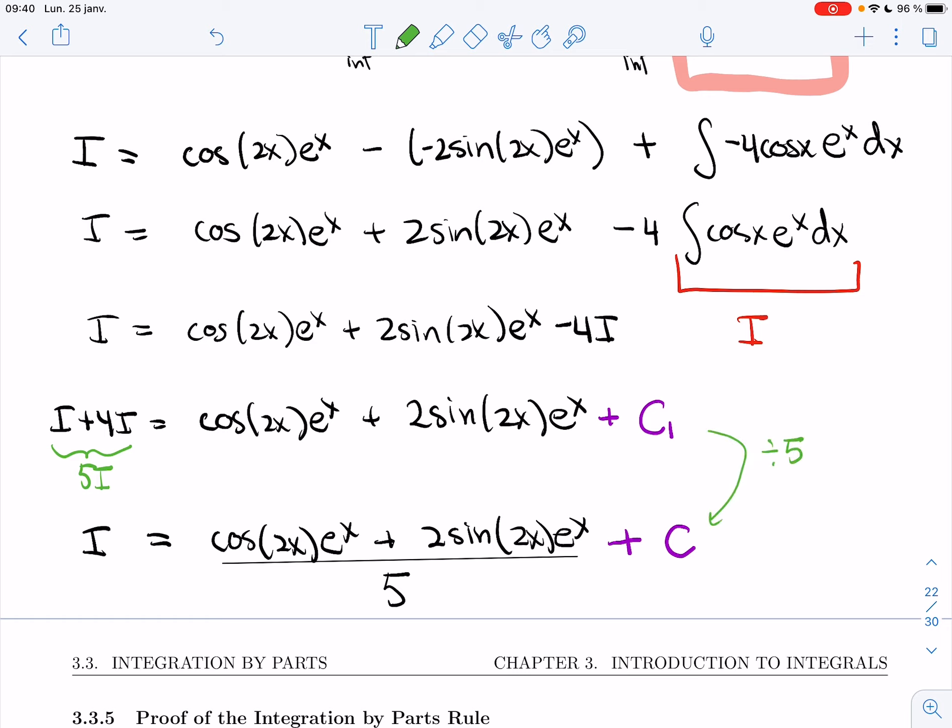And so if you want, that C is C₁ divided by five, but no need to keep track of it. Just call it a different C. All right, and so this right here, that's the answer.